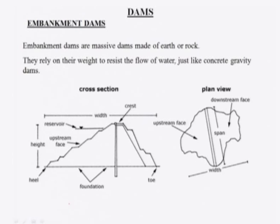In the last class, we discussed dams. One remaining part is about the type of dams — that is embankment dams. Embankment dams are massive dams made of earth or rock. They rely on their own weight to resist the flow of water, just like a concrete gravity dam.